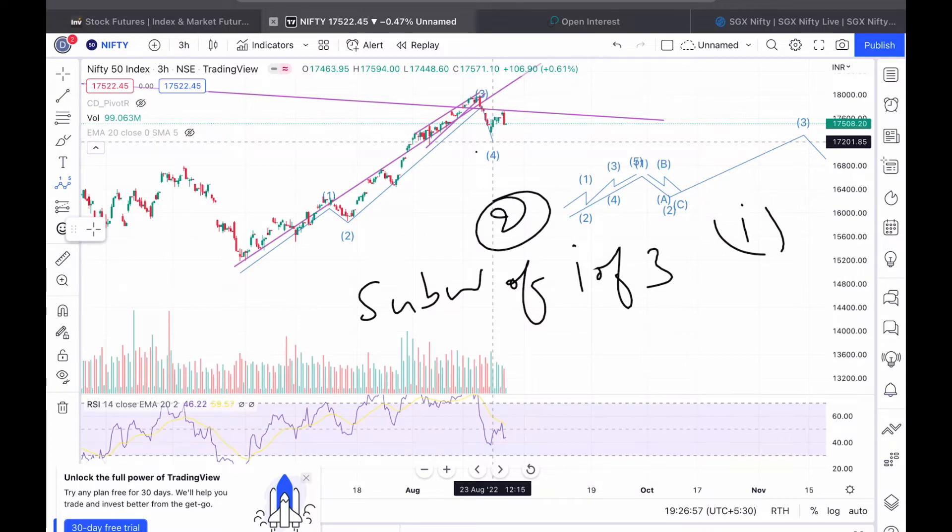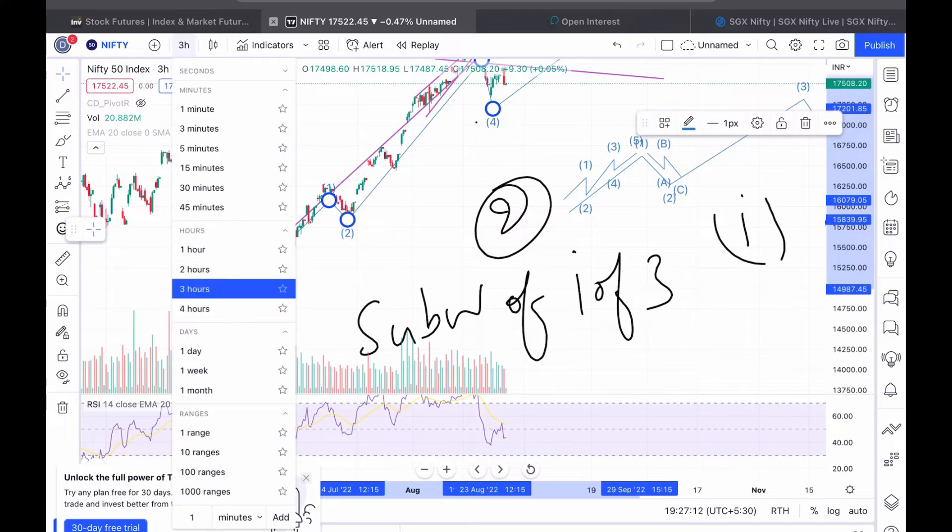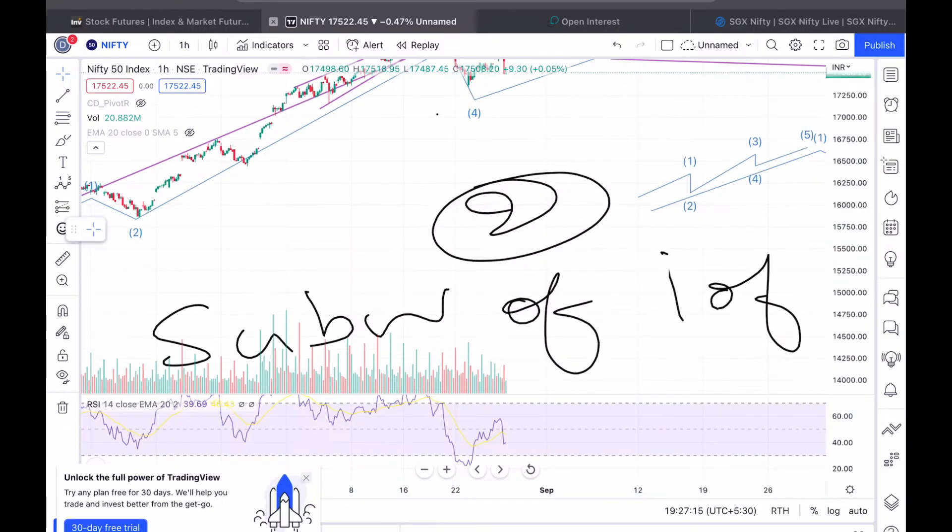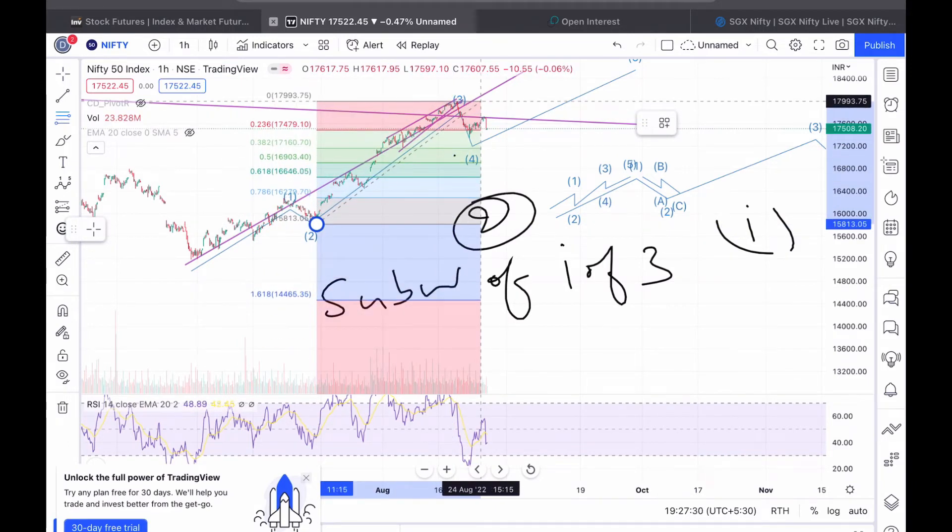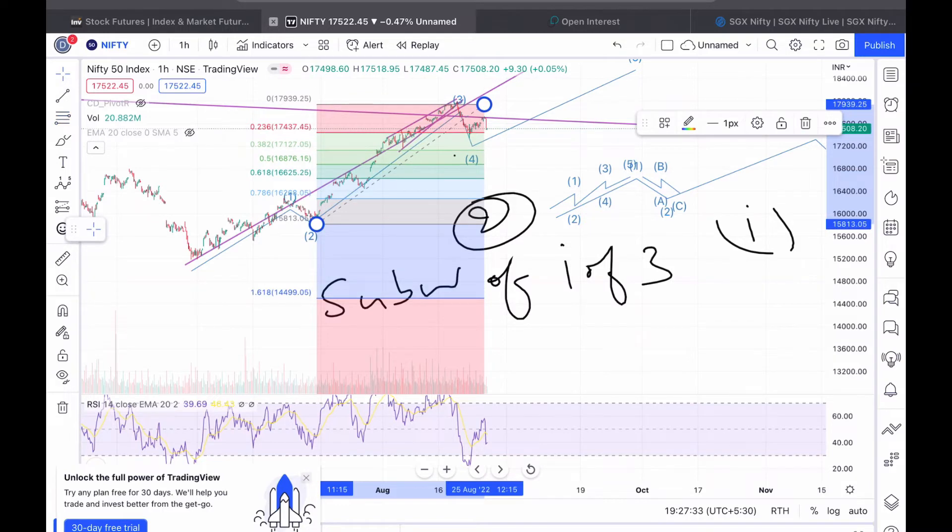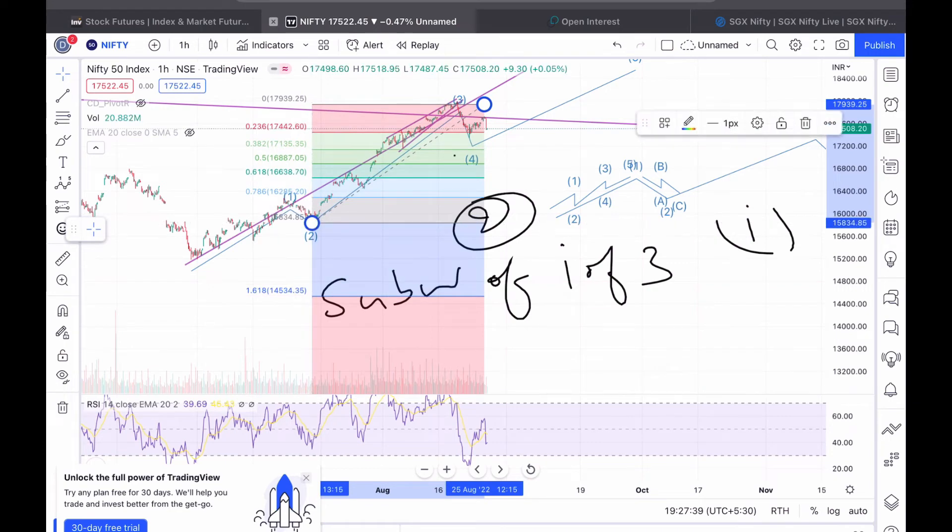Why it is expected? Because fourth wave, if we talk about the books, it cannot go beyond 38 percent of the third wave. So how I have marked this fourth wave and how I know that it's the 38 percent of the third wave? So I'll use Fibonacci levels from here. I'll put it here and then I'll go till the top of the third wave. So if you could see, it started from here and then the 38 percent target, 17,200 is our target.